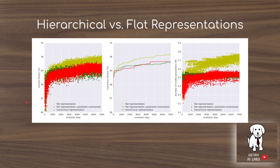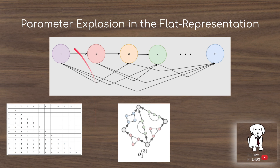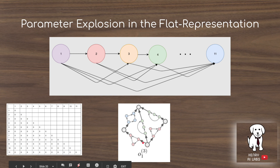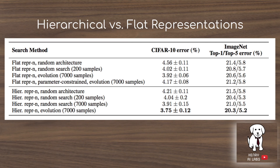The first presentation of results is somewhat discouraging — the flat representation seems to outperform the hierarchical representation. However, the flat models suffer a vicious parameter explosion due to the density of their connections, whereas the hierarchical structure is much more sparse in connectivity. When scaling up from the small network to the large network for CIFAR-10 and ImageNet, the hierarchical representation achieves higher performance, likely due to the parameter complexity issues of the flat representation.